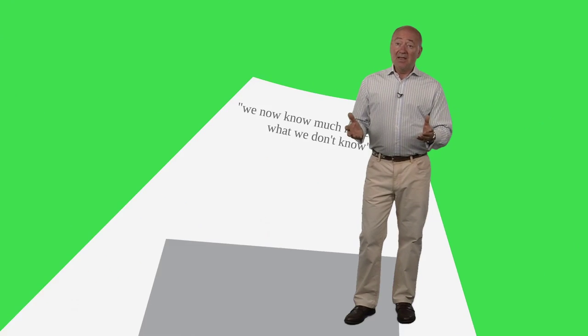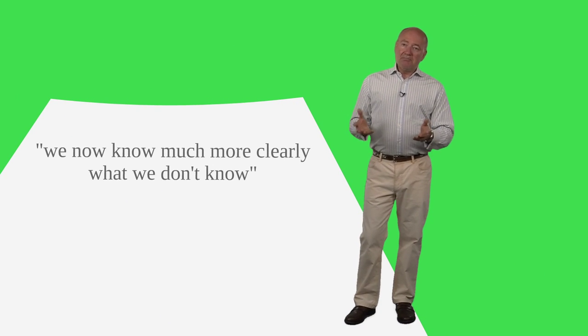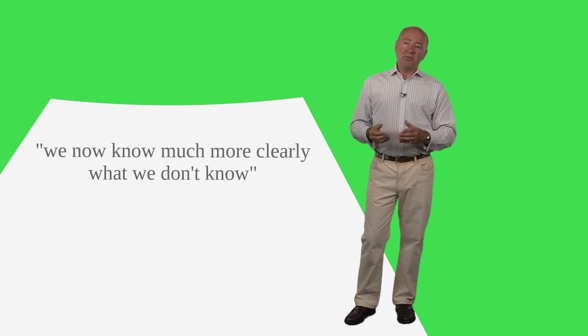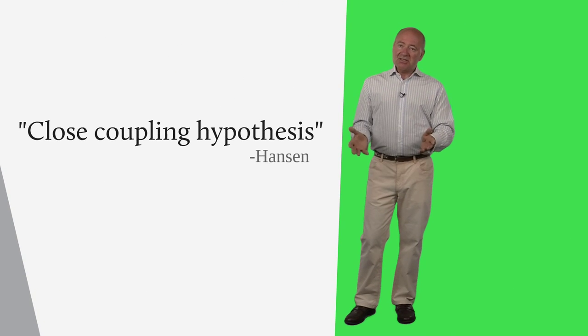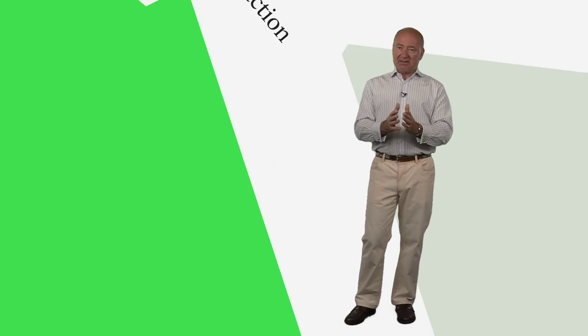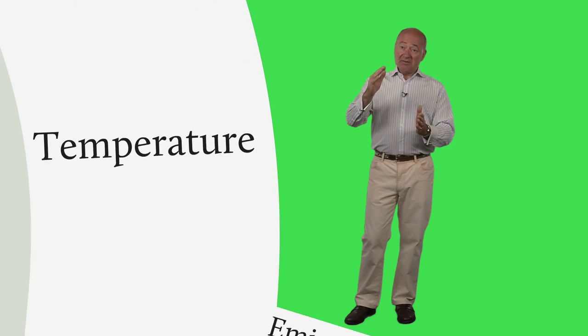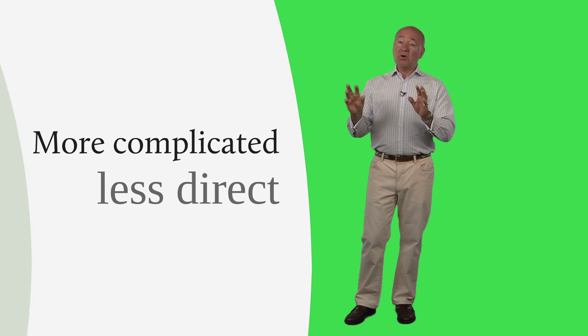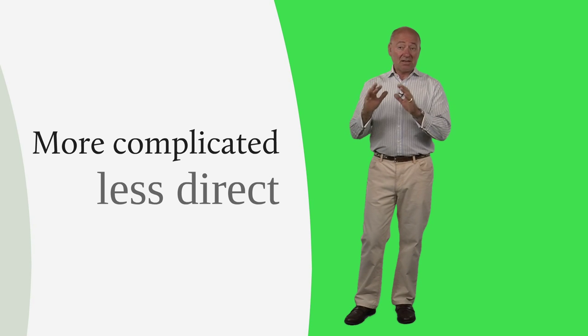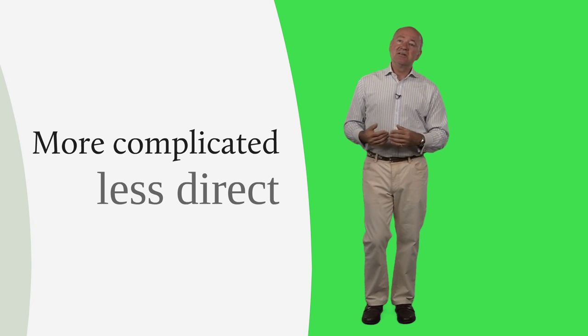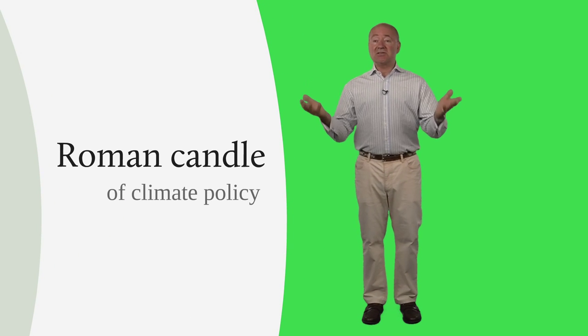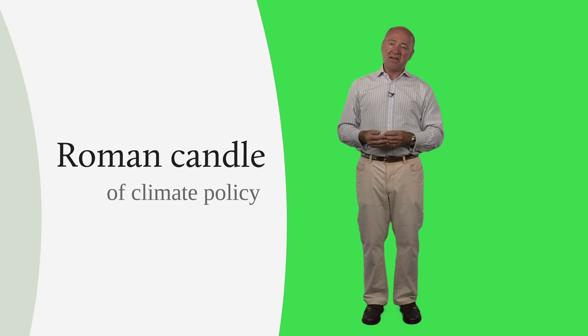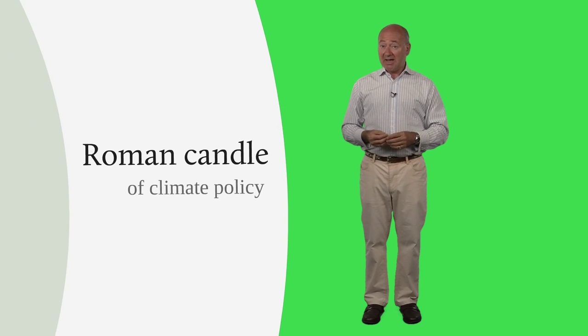Here we are in 2011, and we now know much more clearly than 20 years ago. We now know much more clearly what we don't know. So that we know that the Hansen hypothesis about close coupling between human action, the emission of carbon, temperature, extreme events, those connections are much more complicated and they are much less direct than the political hypothesis that underlies the whole apparatus of this Roman candle of climate policy that we had in the period 2005 to 2009 suggested.